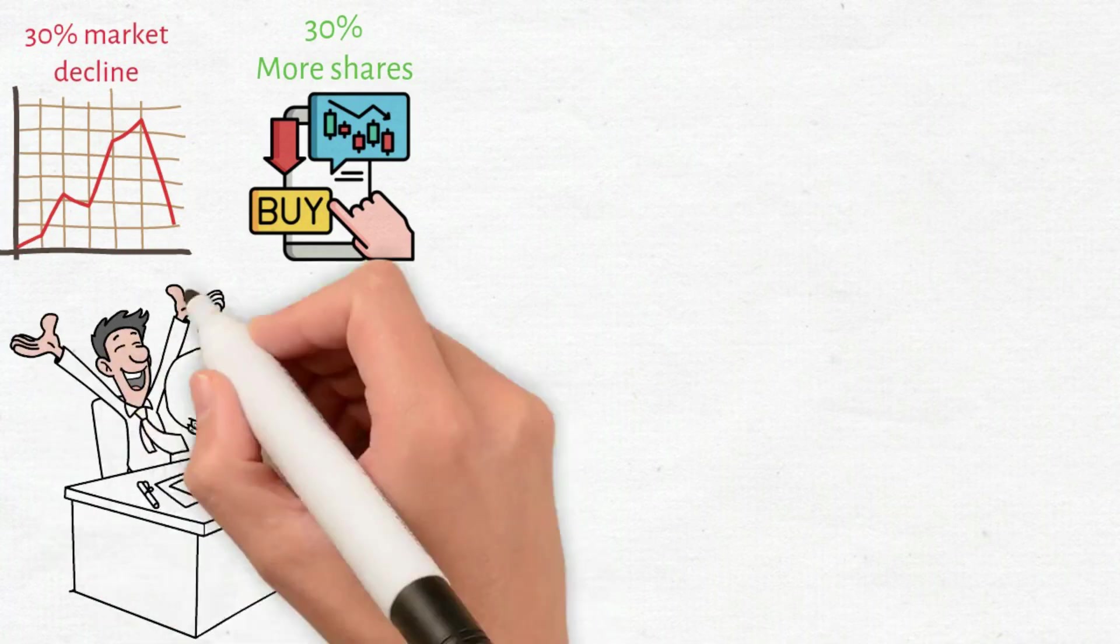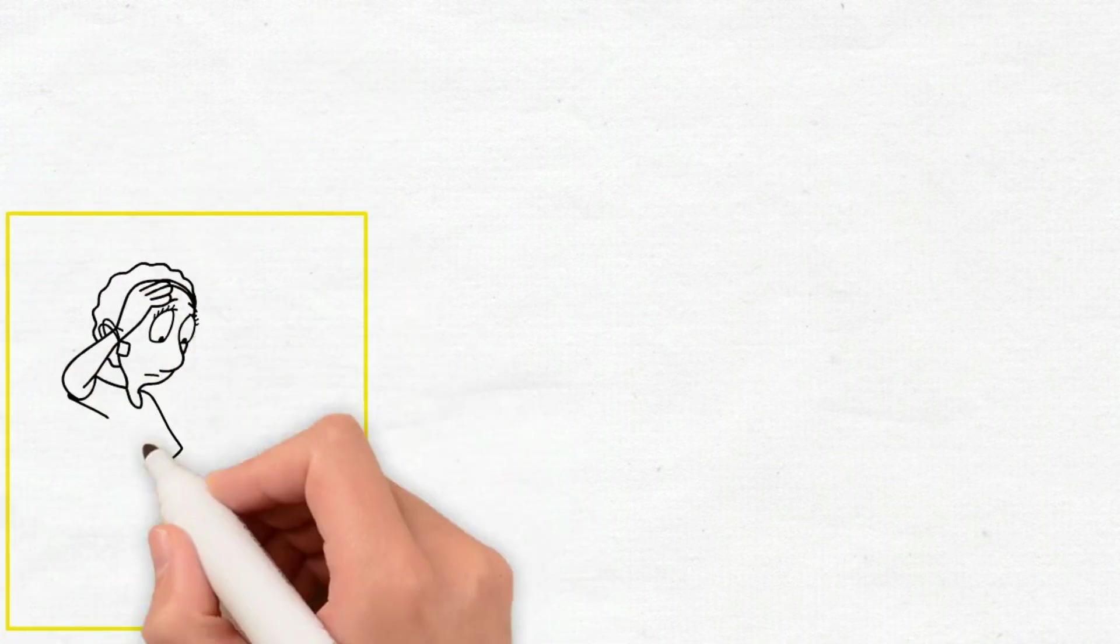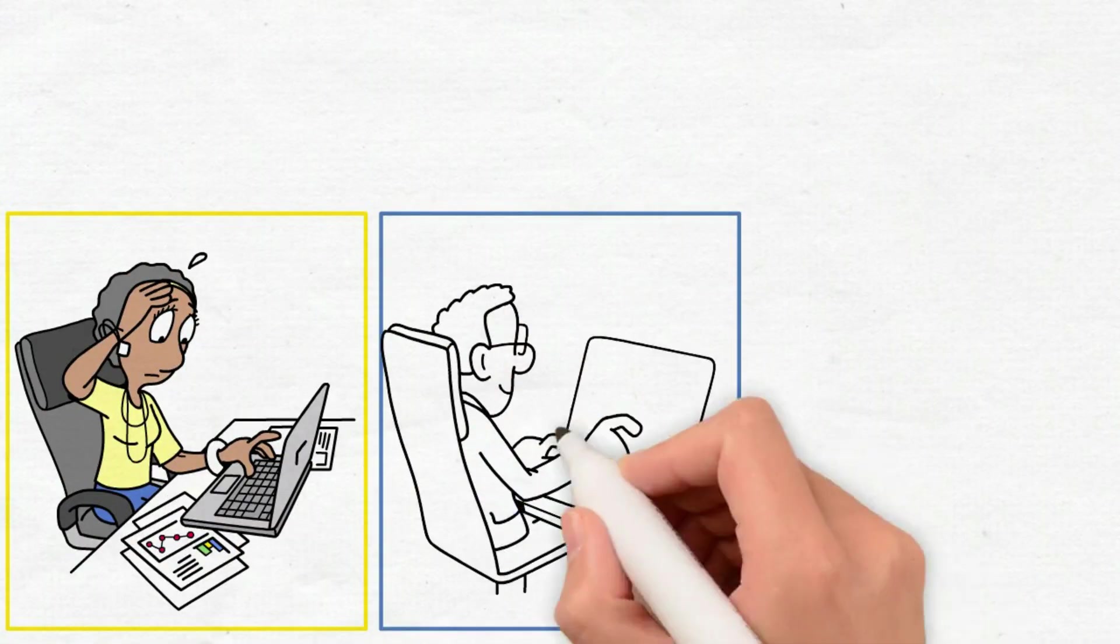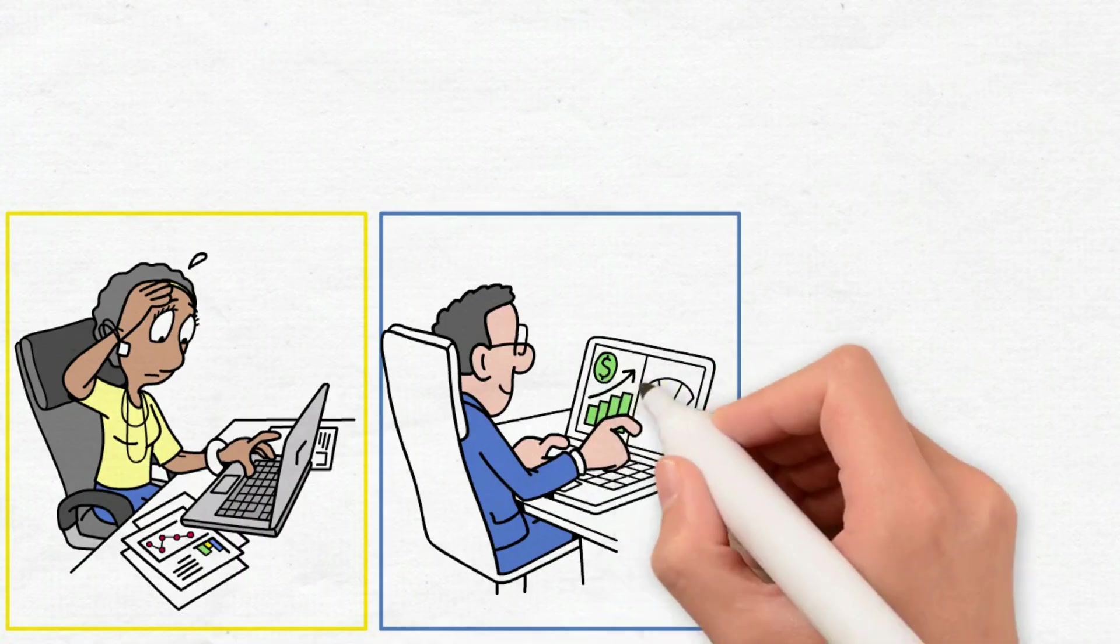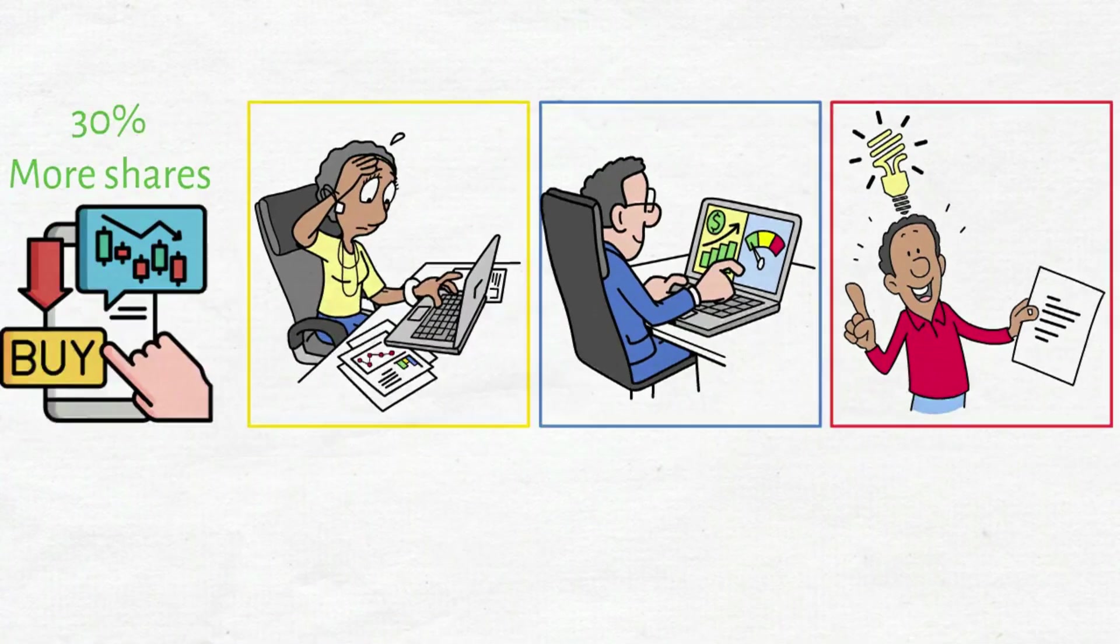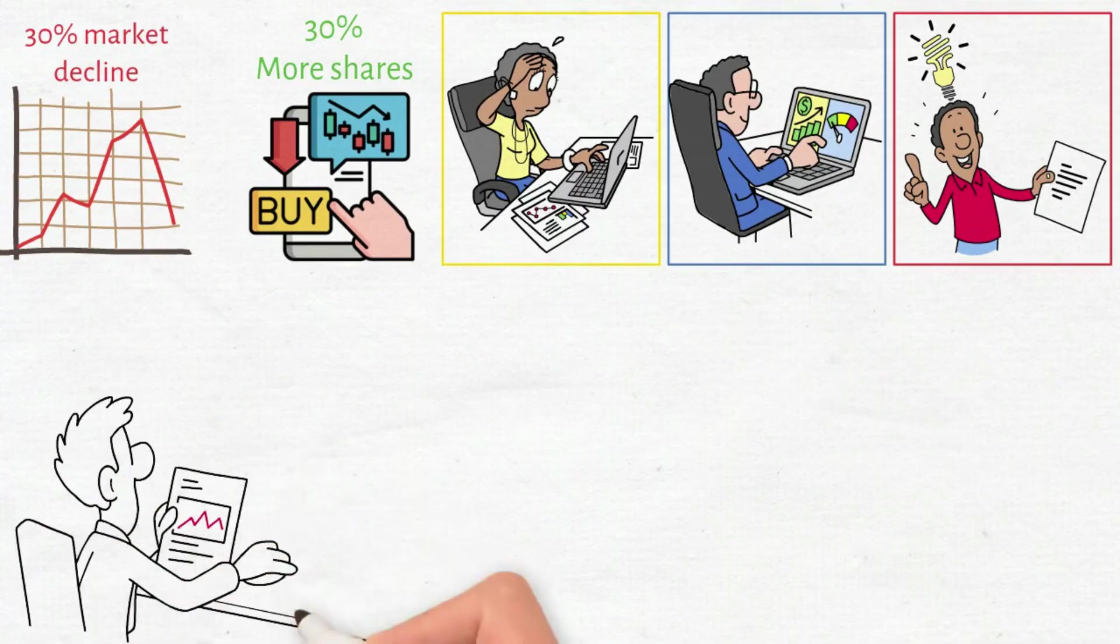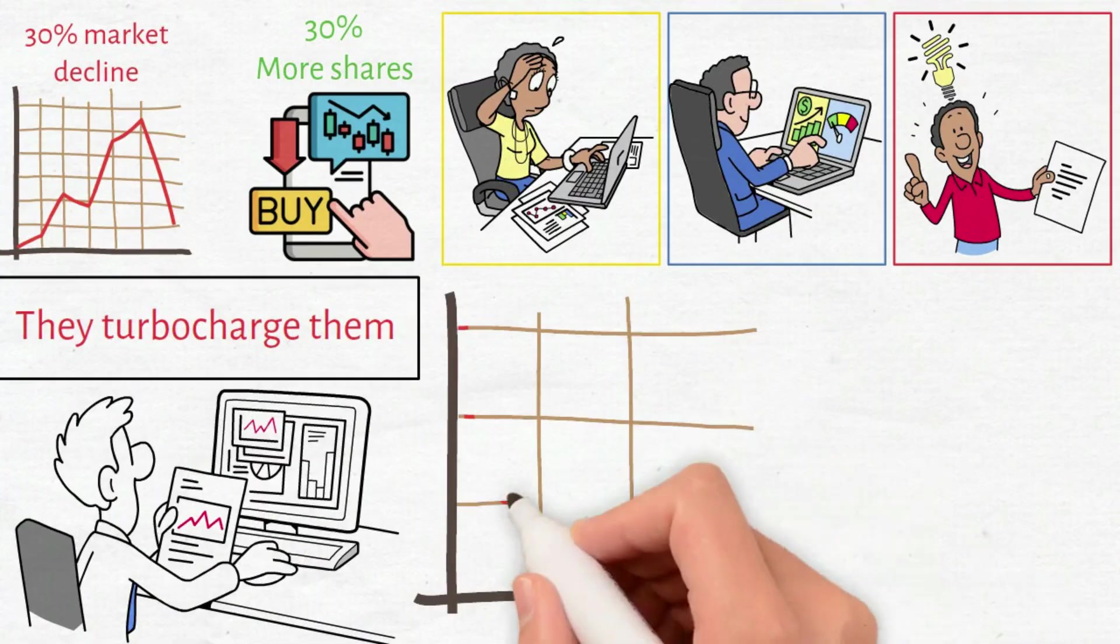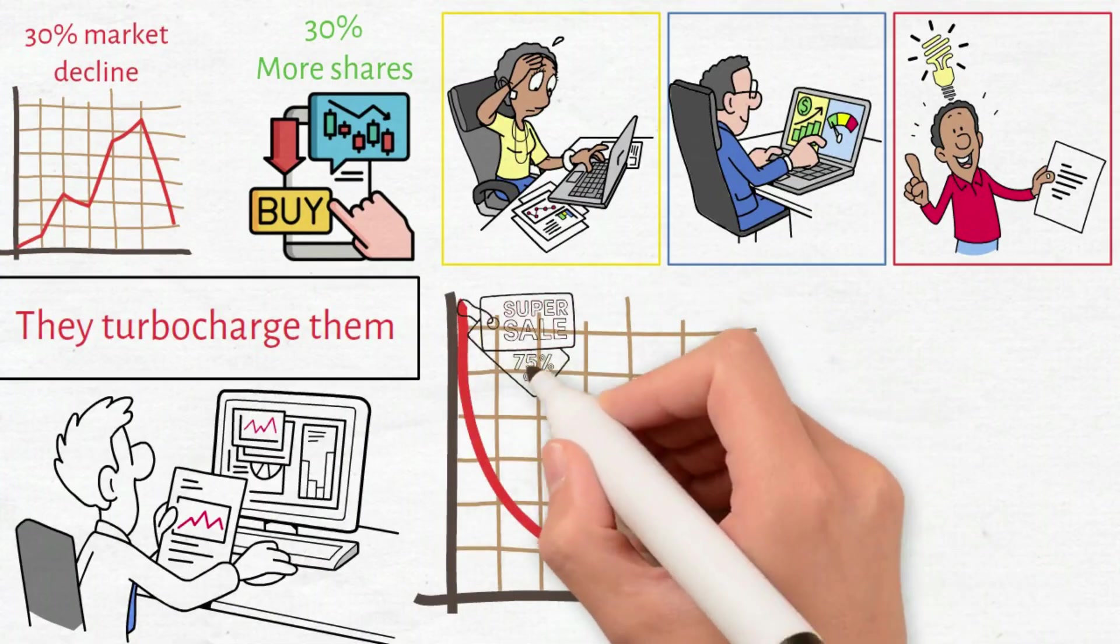Those additional shares generate income that compounds indefinitely. While tech holders watch wealth disappear, income investors acquire perpetual cash flow streams at massive discounts. The ultra-wealthy understand something most people completely miss. Market corrections don't destroy income portfolios. They turbocharge them. Every crash is a clearance sale on future passive income.